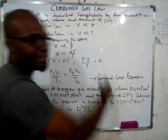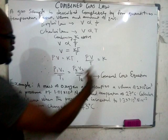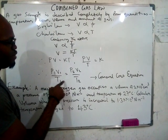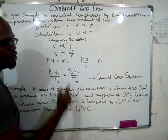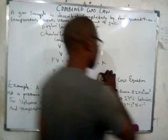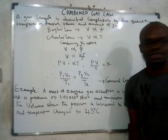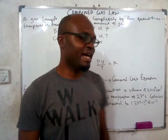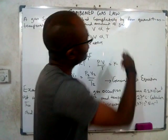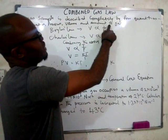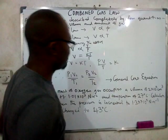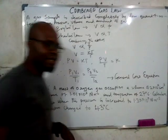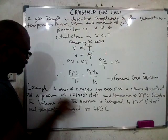Cross multiplying gives PV = kT. Making k the subject gives PV/T = k. Removing k and introducing a second state gives P1V1/T1 = P2V2/T2. This is known as the general gas equation. In subsequent classes we'll learn the ideal gas equation which introduces n, the number of moles, but for now we stop at three variables.